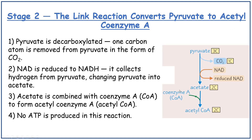The link reaction converts pyruvate to acetyl-CoA. Pyruvate is decarboxylated — one carbon atom is removed in the form of carbon dioxide. NAD is reduced to form reduced NAD by collecting hydrogen from the pyruvate, changing pyruvate into acetate. Acetate is then combined with coenzyme A to form acetyl-CoA, which is two carbon. No ATP is produced in this reaction.